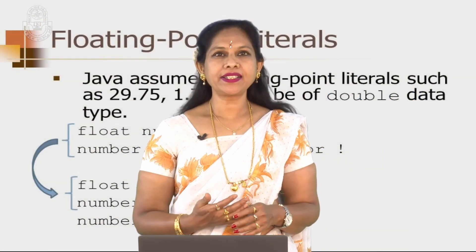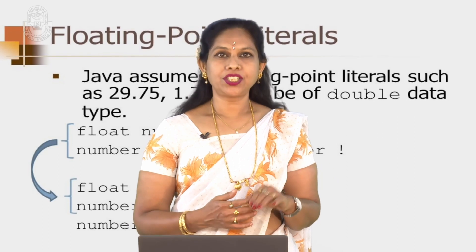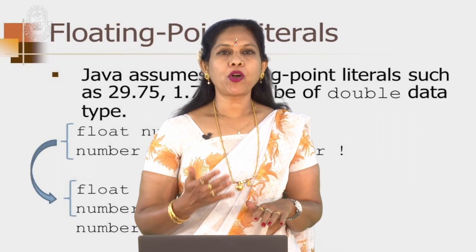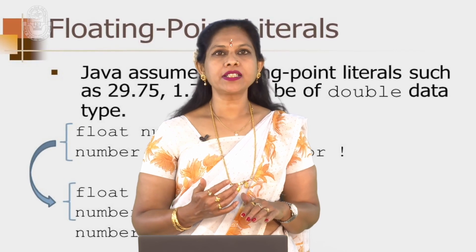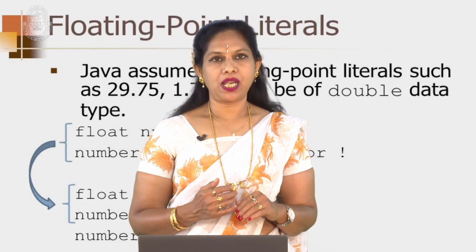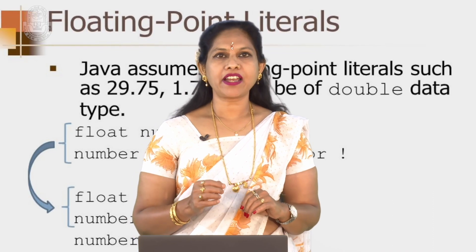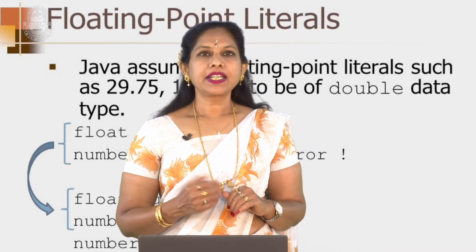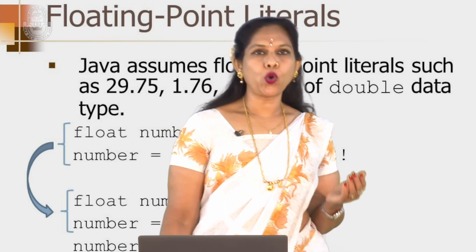Floating point literals have a decimal part and an integer part. Floating point literals result in floating point numbers of type double. By appending small f to a number, it can be changed to type float.